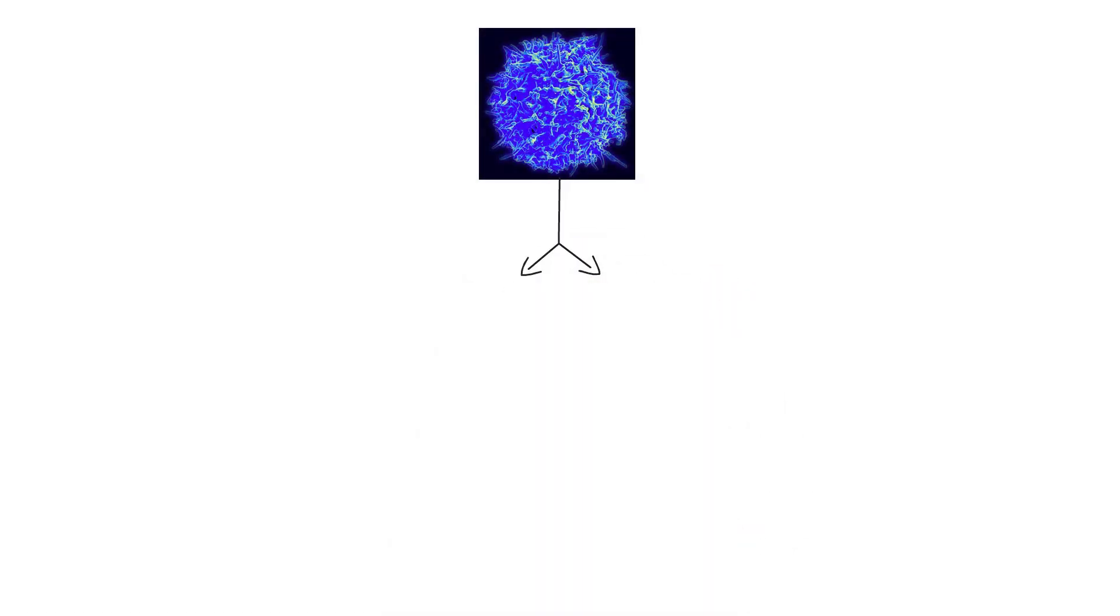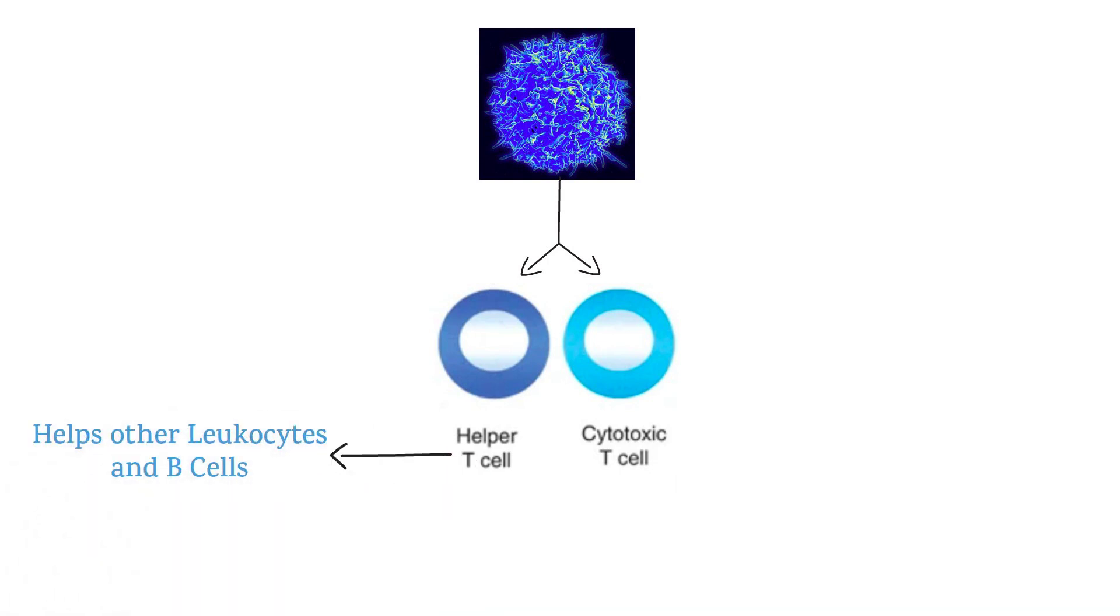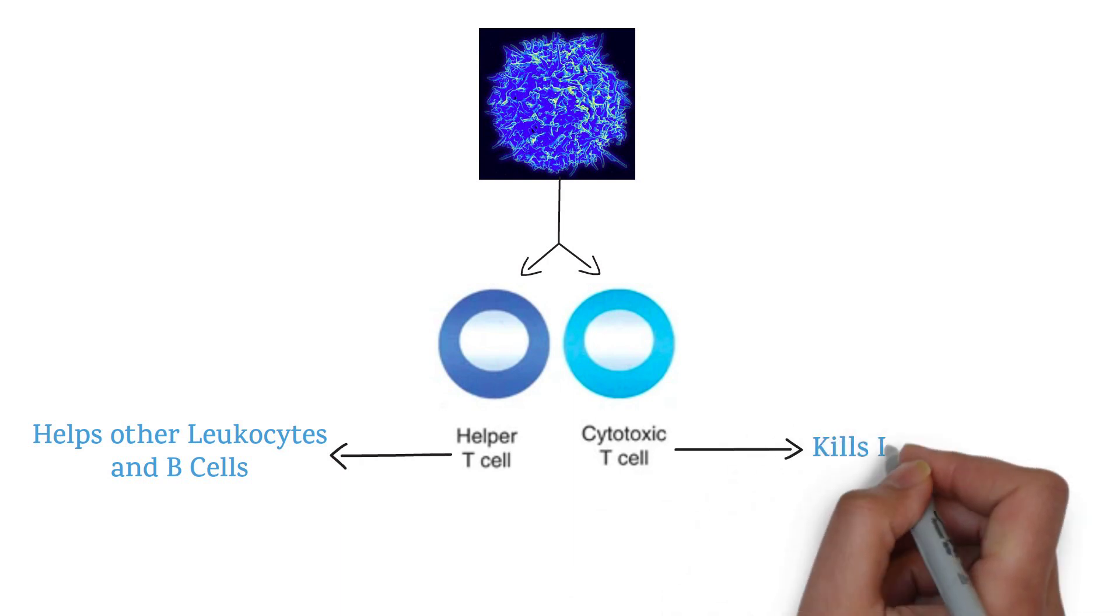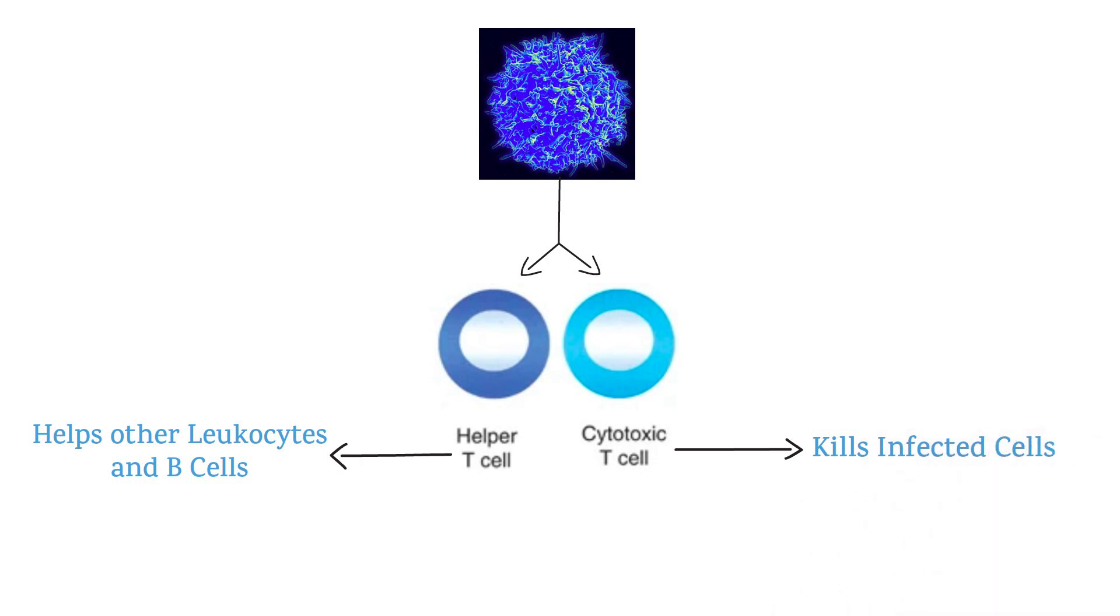Cytotoxic T cell is also known as killer T cell. Helper T cell helps other leukocytes, white blood cells, and B cells. On the other hand, cytotoxic T cell or killer T cell kills infected cells. These killer T cells and helper T cells now leave the lymph node and travel to carry out various immune functions.